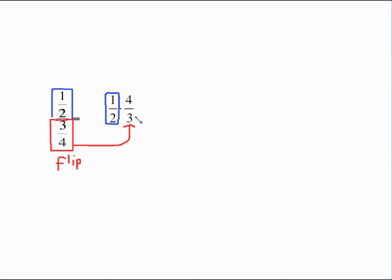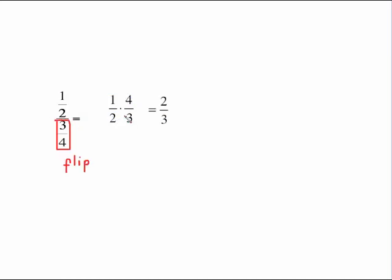So we are going to take the bottom fraction, flip it upside down, and multiply it by the top fraction. Here in blue, that one-half didn't change. In red we did flip the bottom and make it four-thirds. What we can do now is just a little bit of reducing: two goes into two once, two goes into four twice, and we're just left with two-thirds. That's a really simple example because it was just number over number.